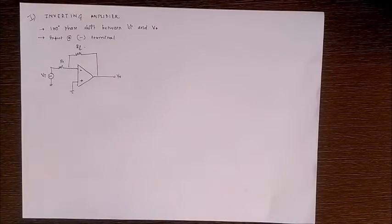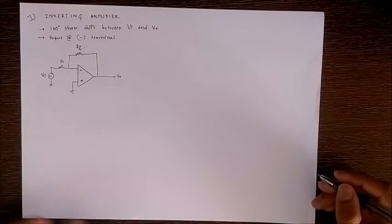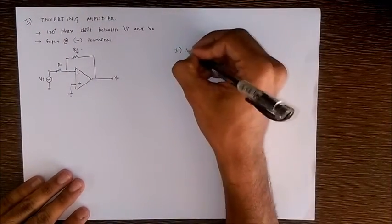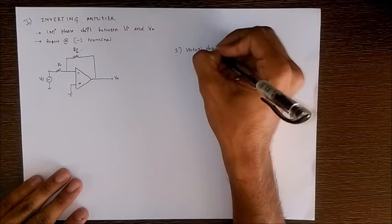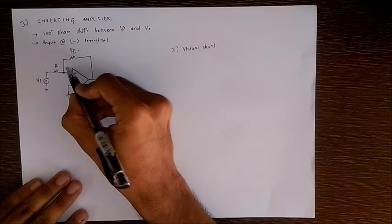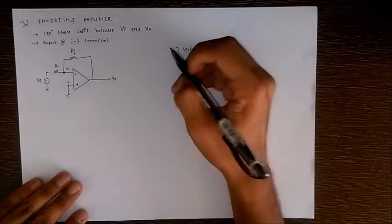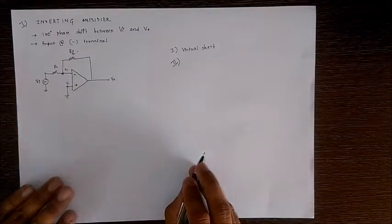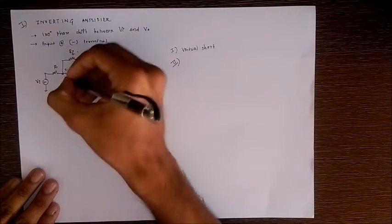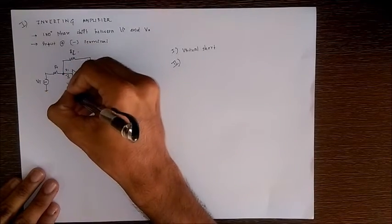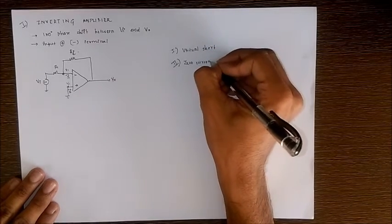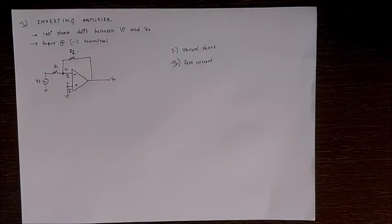Now we have to analyze the circuit. Before going into analysis, you have to know two basic assumptions. The first is virtual short, which means the two input terminals are at the same potential — if this point is V1, then this point is also V1. The second assumption is that zero current is drawn by both inputs of the OPAMP, so I1 and I2 both equal zero. These are the two assumptions we take throughout the analysis of all OPAMP circuits.